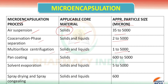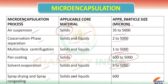The next one is pan coating. In pan coating, the applicable core material is solid and the particle size is 600 to 5000 micron. The fifth process is solvent evaporation, applied for both solid and liquid, and the particle size is 5 to 5000 micron. The sixth and last process is spray drying and spray congealing, applied for both solid and liquid, and the particle size is 600 micron.